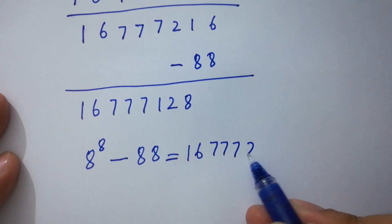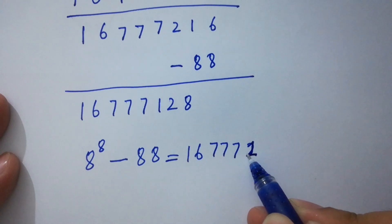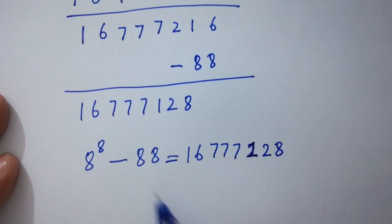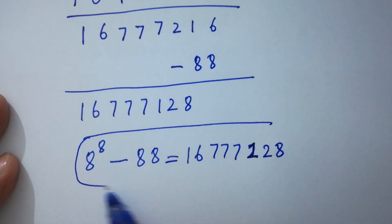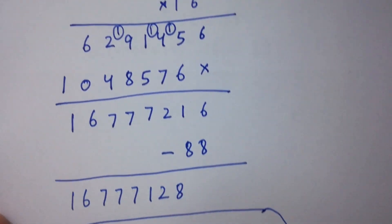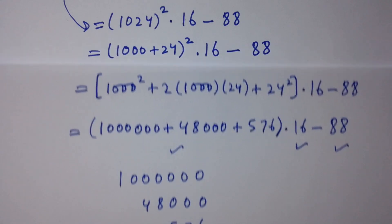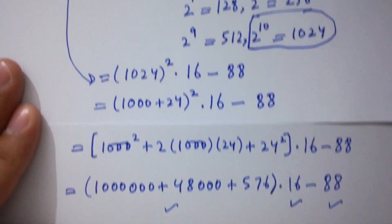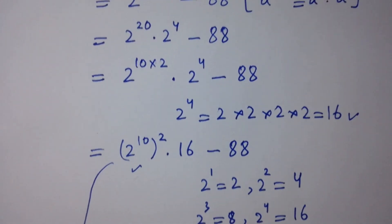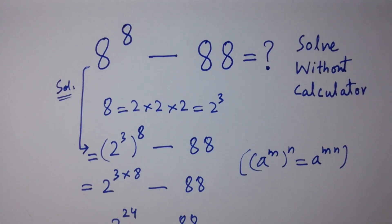So finally, 8 to the power 8 minus 88 equals 16,777,128. That is our final answer without a calculator. Thanks for watching this video. Please subscribe to this channel to get notifications of my new videos, and don't forget to share these videos with your classmates and friends. You can also visit the playlist of this channel to learn more. Okay, bye!